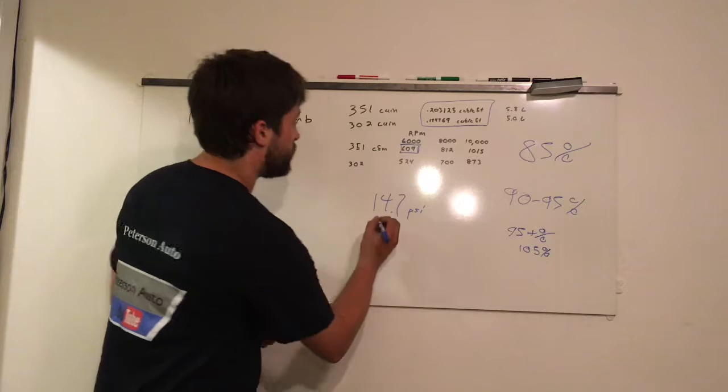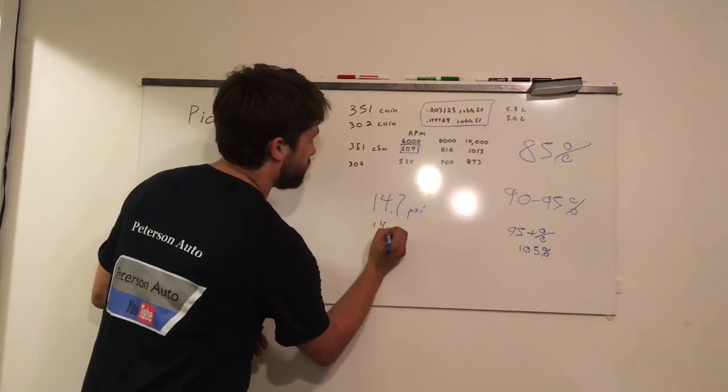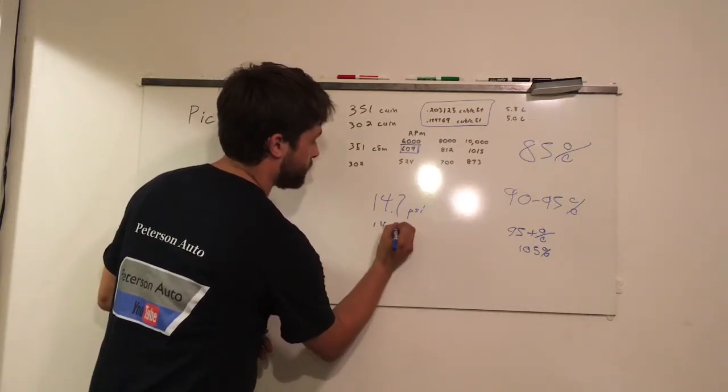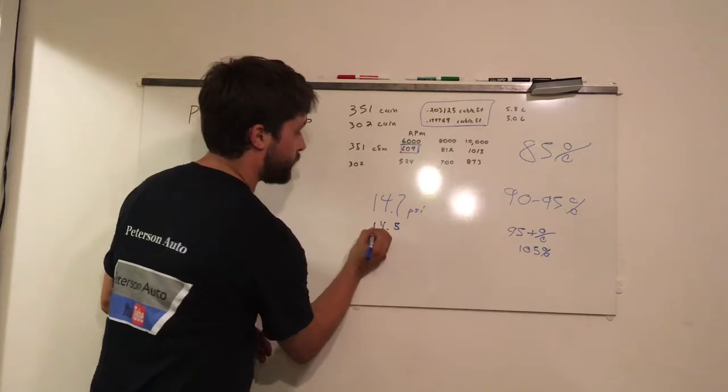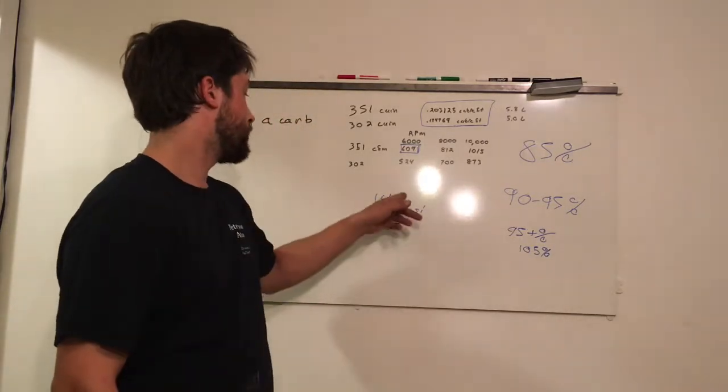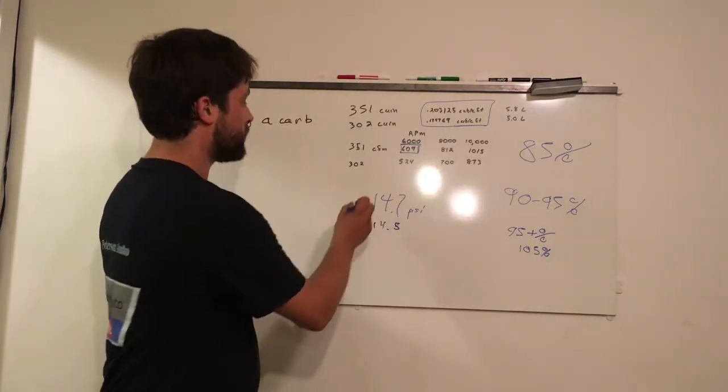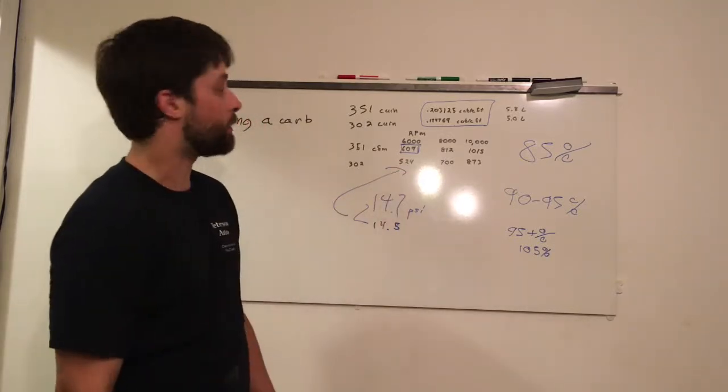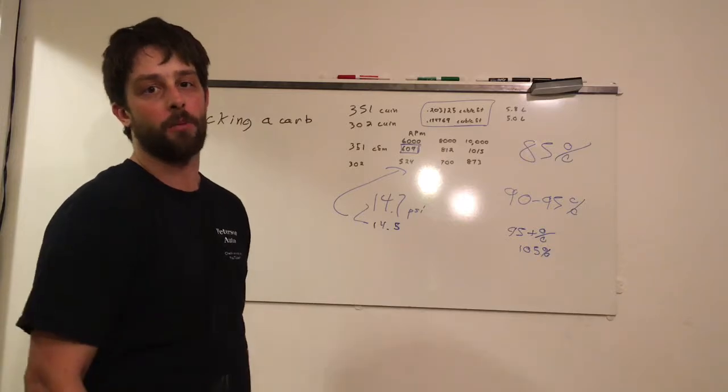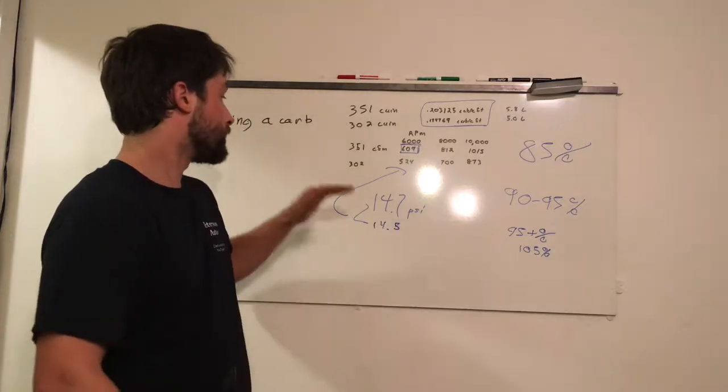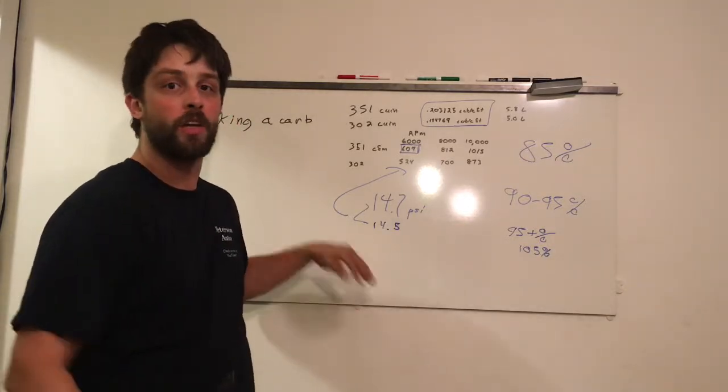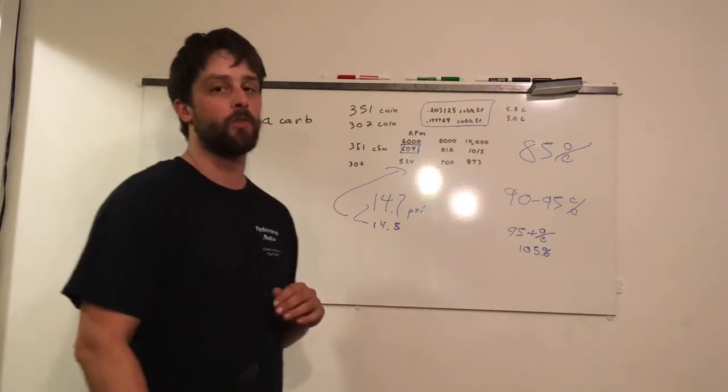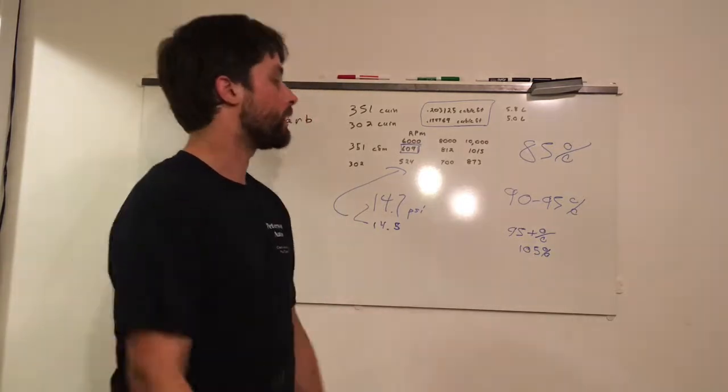So 14.7 PSI air pressure at sea level, let's say at your altitude you get 14.5 PSI. Find your percent difference between these two and then take that times whatever number you have up in here. And that's going to give you a compensation for your altitude. Again, such a minute difference, unless you're doing a dedicated race engine you don't have to worry about it.